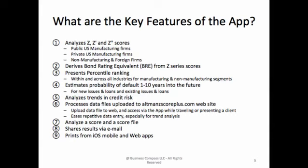What are the key features of the app? It analyzes Z, Z-prime, and Z-double-prime scores for US public manufacturing firms, US private manufacturing firms, and for non-manufacturing and foreign firms. It derives bond rating equivalents from Z-Score, presents percentile ranking within and across all industries for manufacturing and non-manufacturing segments, and estimates probability of default 1 to 10 years into the future for new issues and loans and for existing issues and loans.